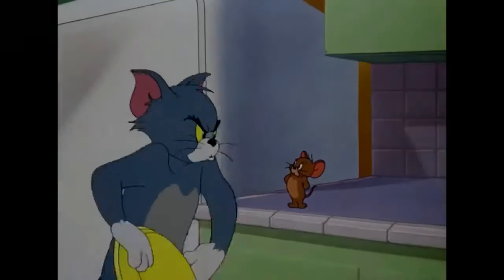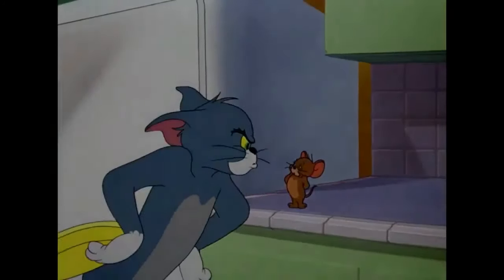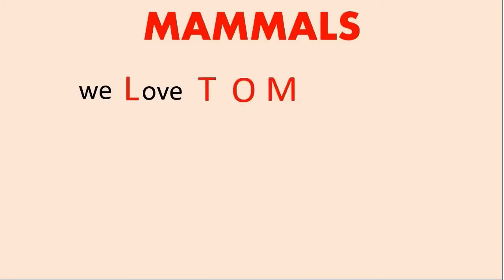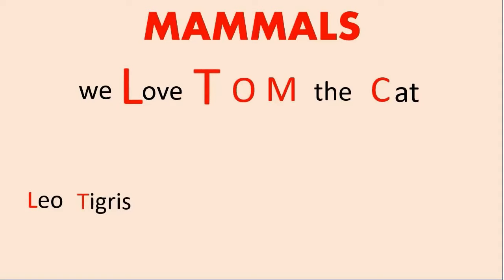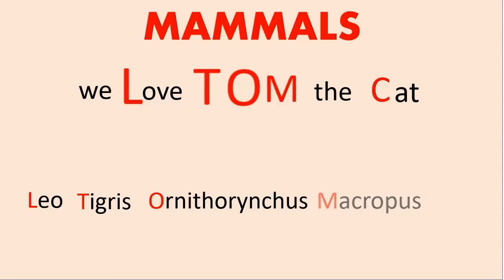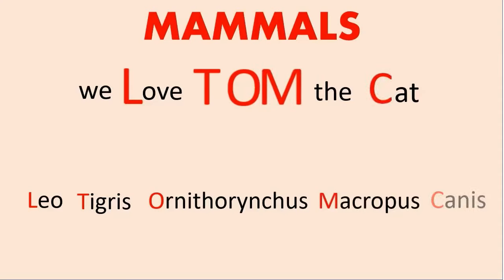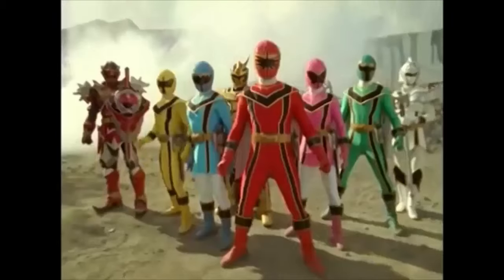We all love the character of Tom, right? So the trick is simple: 'We Love Tom the Cat.' Love's L is for Leo. Tom's T is for Tigris. O is for Ornithorynchus. And N is for Macropus. We love Tom the Cat — Cat's C is for Canis. Remember? Easy.